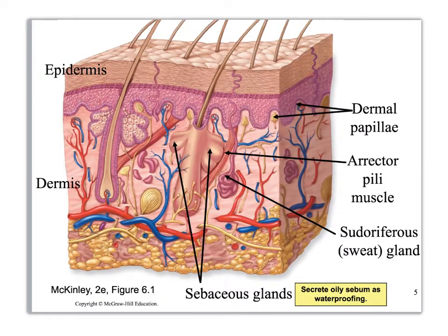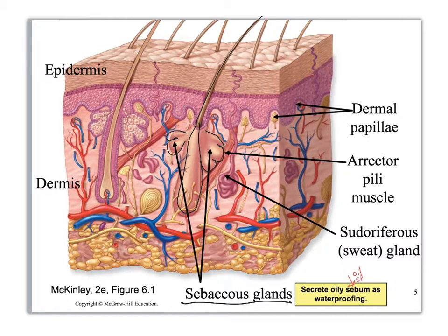Let's start with the sebaceous glands. Right here I have a hair follicle. Around the hair follicle I have these little bags that kind of look like saddlebags hanging on either side of a horse — these are called sebaceous glands. They secrete an oily sebum, which is a mix of oil and dead skin cells. This basically lubricates and waterproofs your skin and hair. Also attached to that hair follicle is what is called the erector pili muscle. This is smooth muscle — when it contracts, it causes your hairs to stand up on end, basically creating goosebumps.